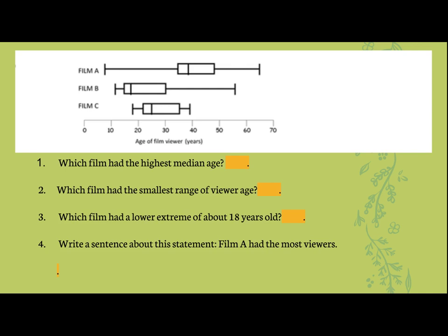One other thing you need to know is how to analyze and compare box plots. We've got three films — A, B, and C. The title says the age of the film viewer in years. Which film had the highest median? Remember the medians are right here. The film with the highest median was film A.